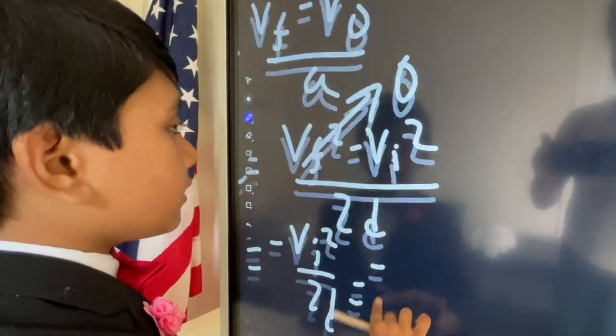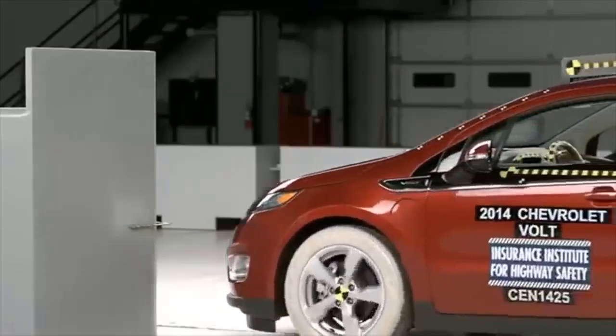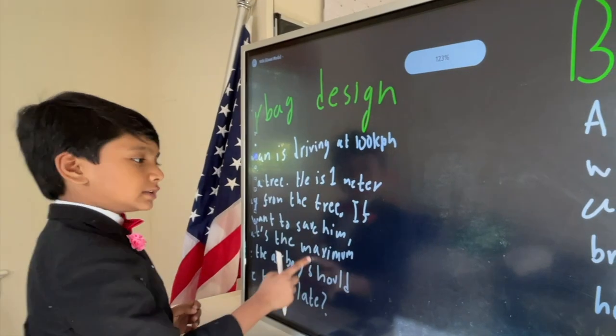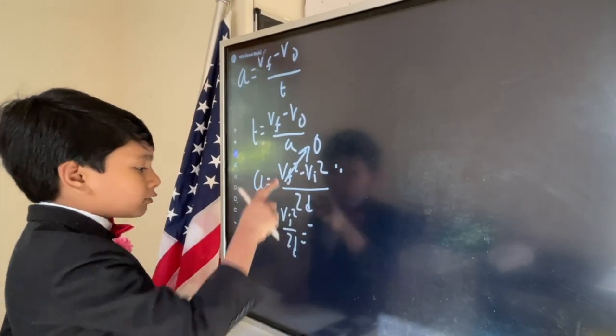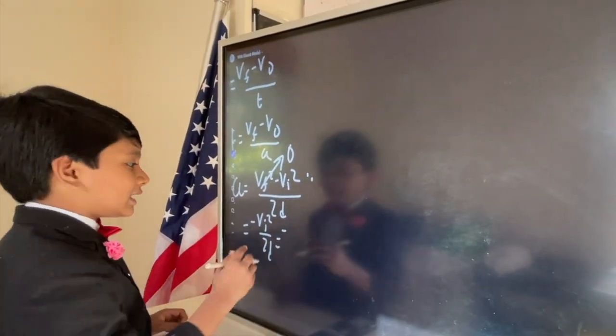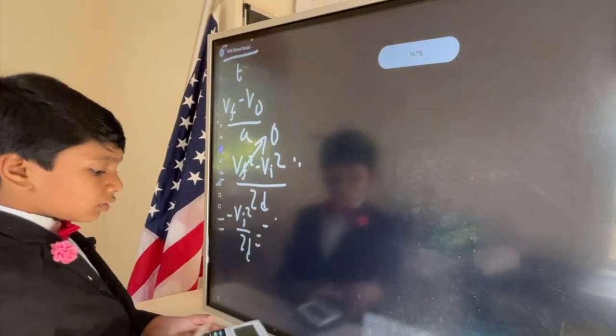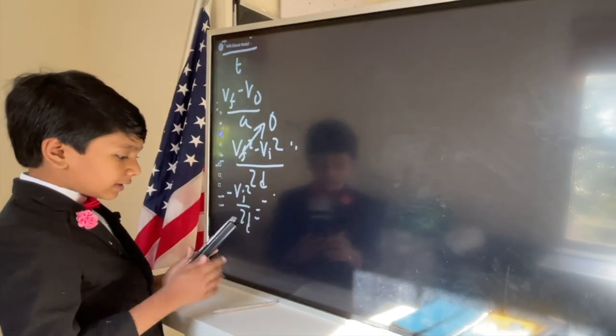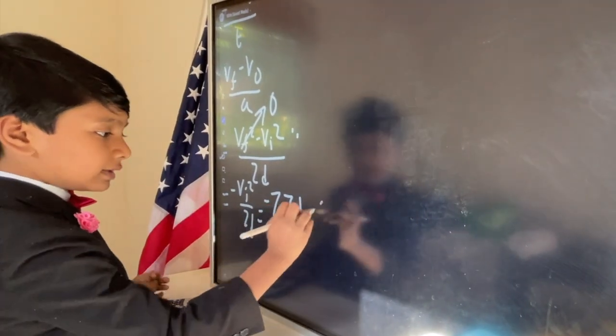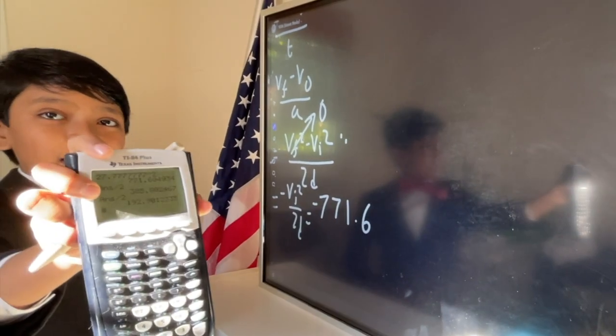We know that he has initial velocity 100 kilometers per hour, which can be translated to 27.8 meters per second. So if we square that, we get 771.6, as shown on the calculator.